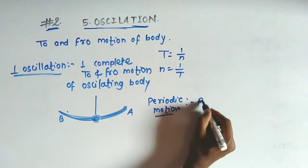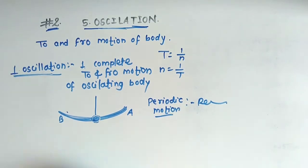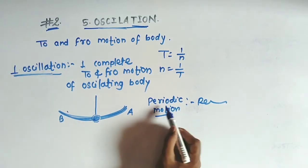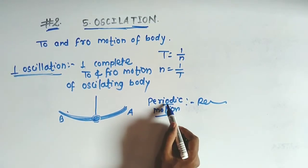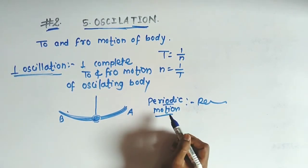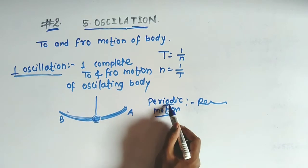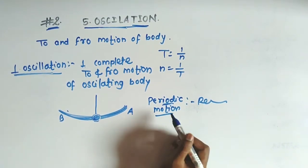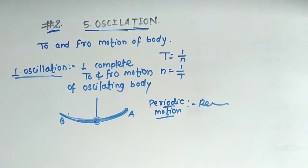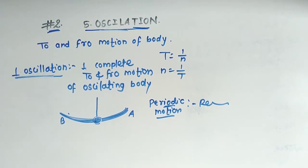When a motion repeats itself in a regular interval of time, it is called periodic motion. This is periodic motion in a regular interval of time. Simple harmonic motion is a part of this study.